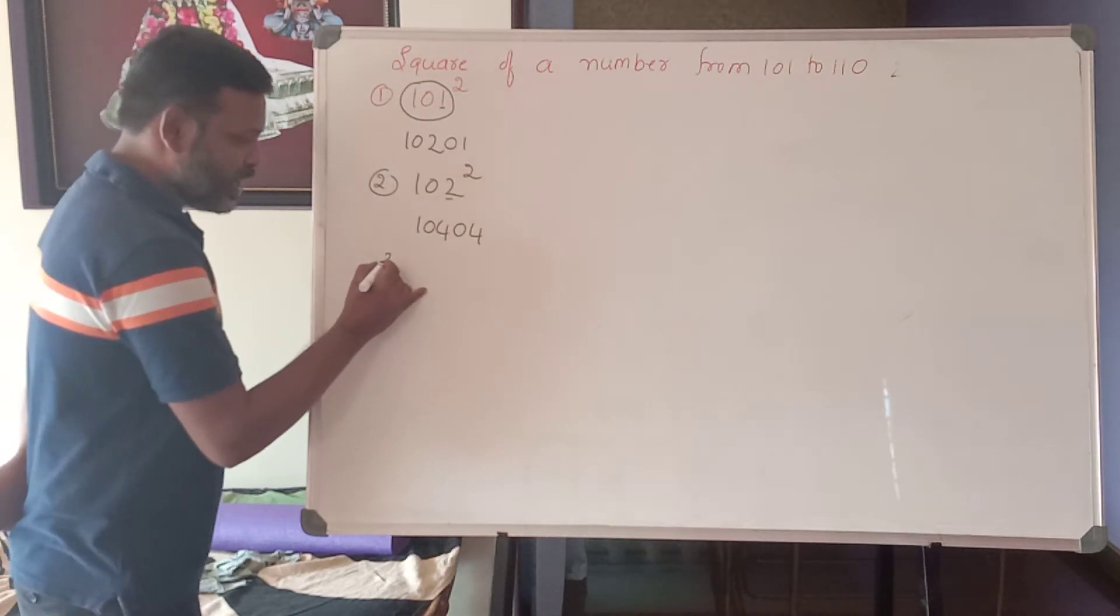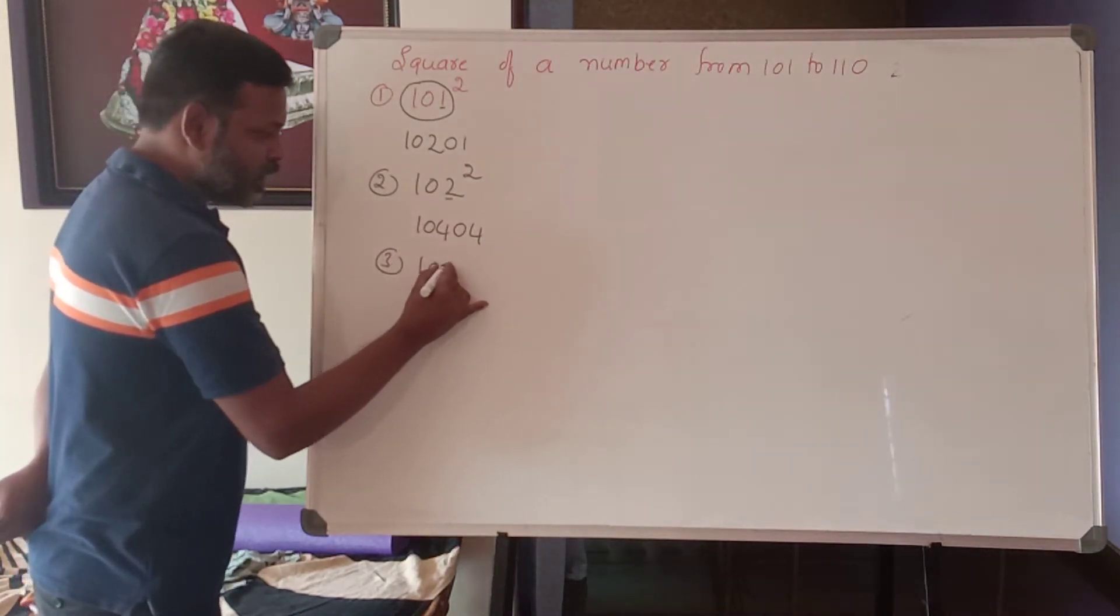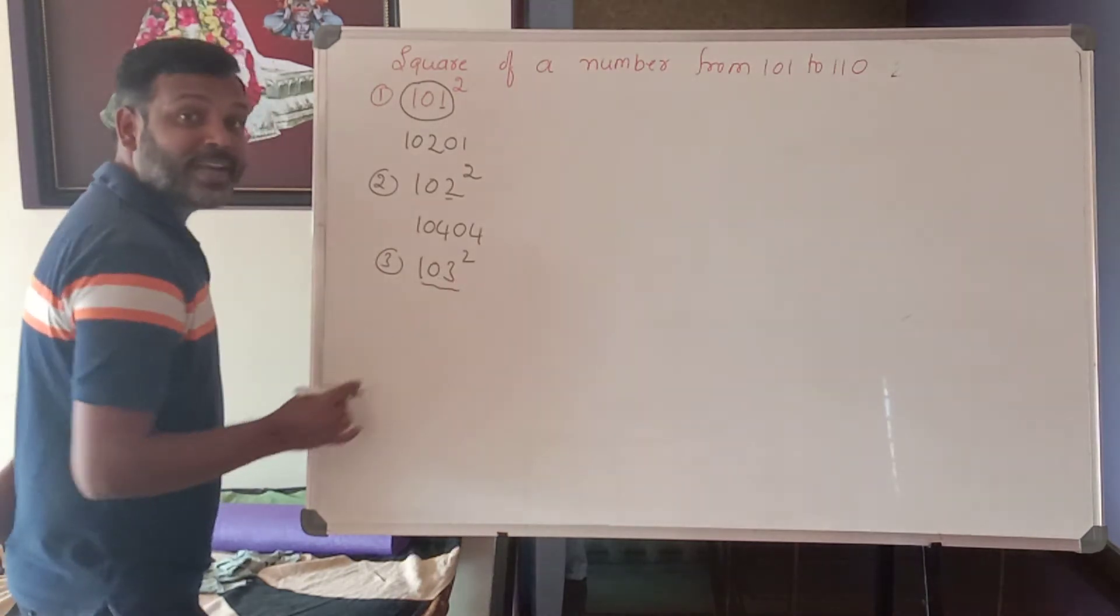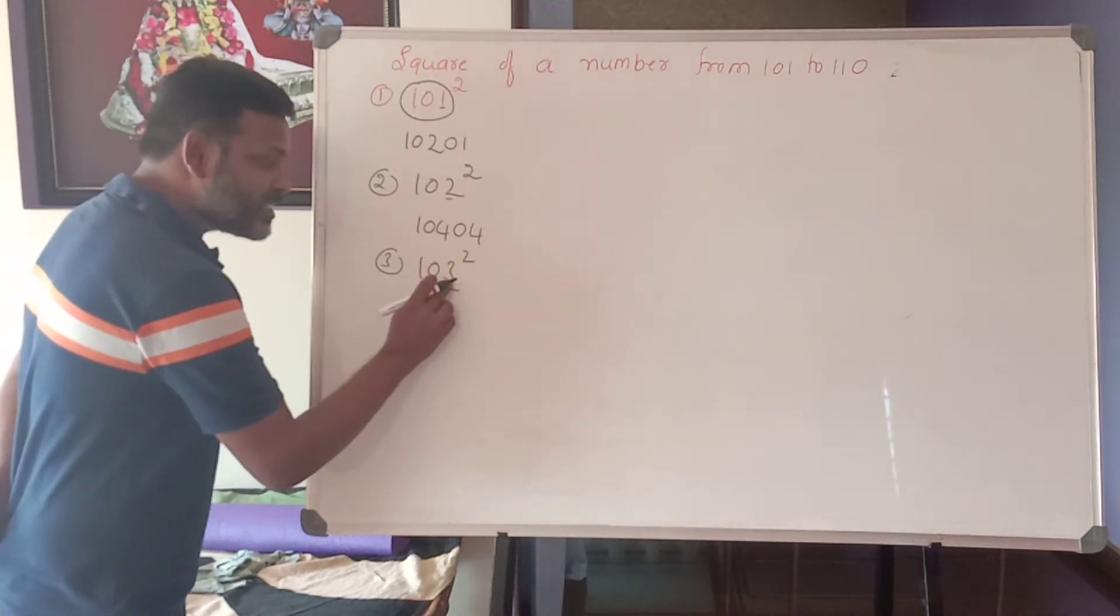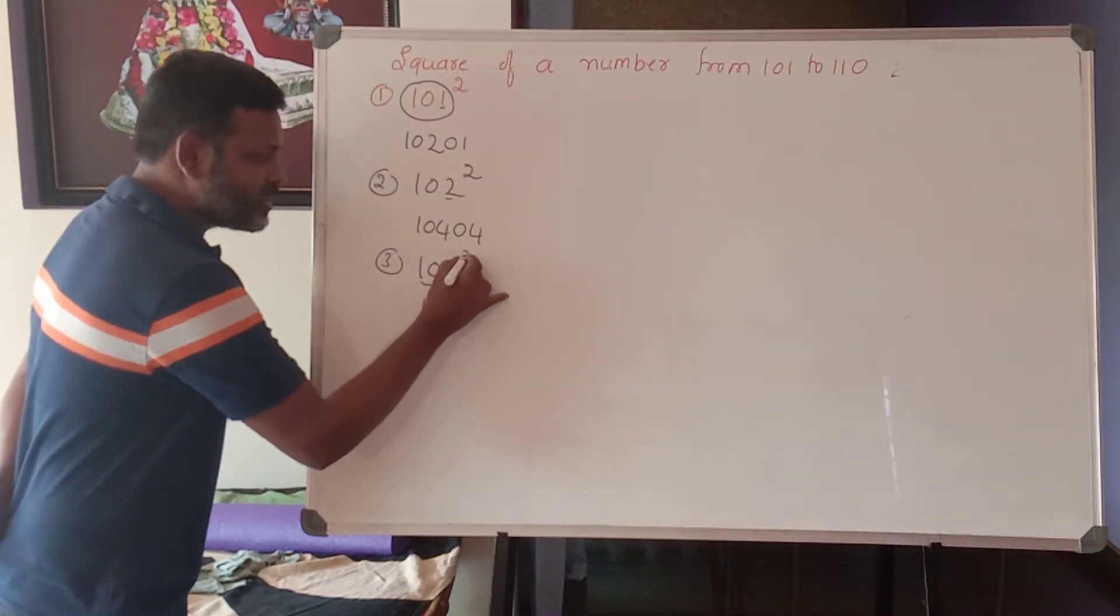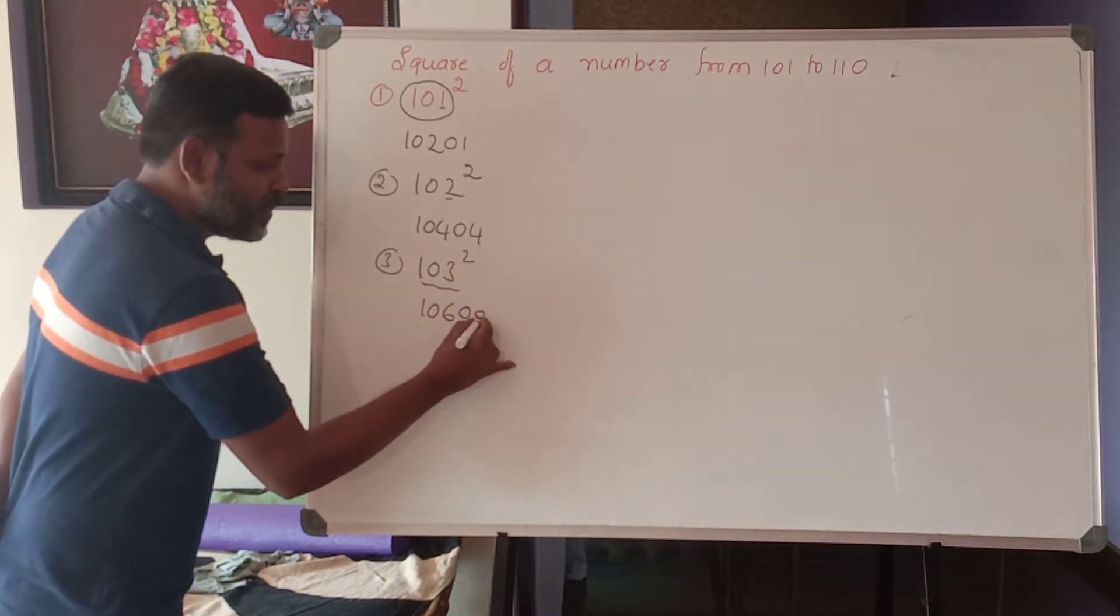Is it clear? 104. The third one is 103 square. The given digit is 103 plus last digit 3. 103 plus 3, what is that? 106. And 3 square is what? 09.